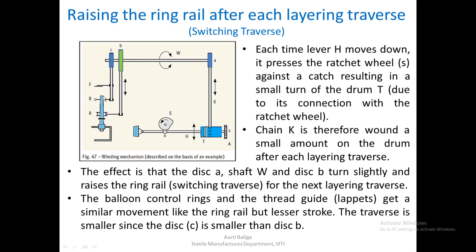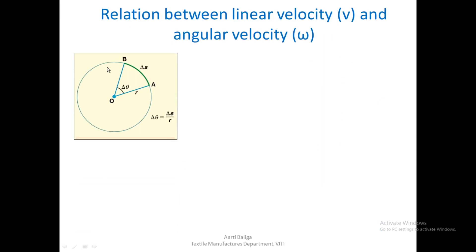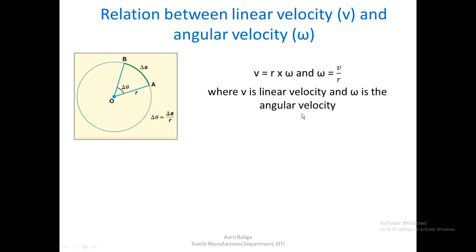The diameter difference between disc B and disc C gives a different traverse to the ring rail versus the lappets and balloon control ring. To understand this, let us revise the relation between linear velocity v and angular velocity ω. For a particle moving along a circle, the relation is: v = r · ω, or ω = v / r, where v is linear velocity and ω is angular velocity.